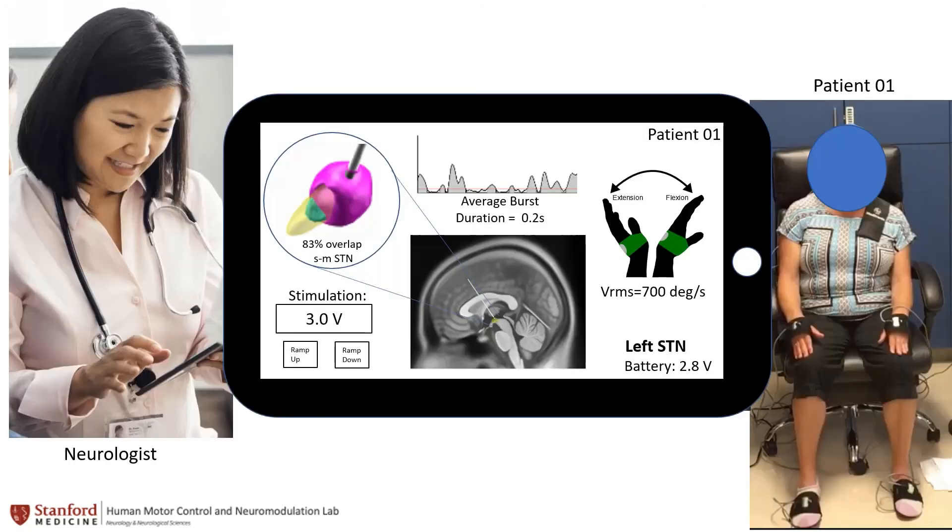We envision that our findings could be translated to better-informed clinical programming to optimize therapy. With the advent of commercially available sensing neurostimulators, it is now possible for a clinician to record the beta oscillopathy in the clinic.